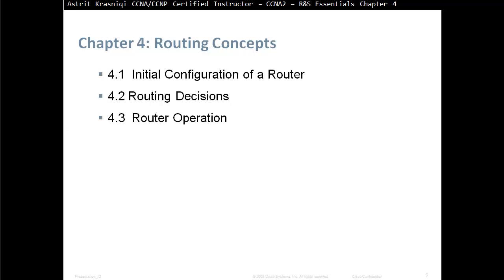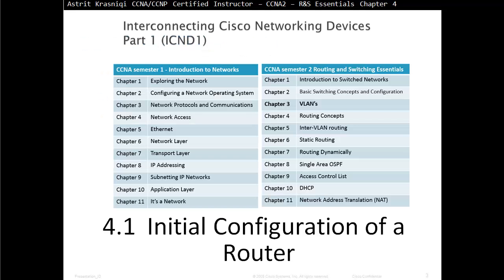Chapter 4, Routing Concepts, is separated into three sections. We have Section 4.1, Initial Configuration of Router. Then Section 4.2, Routing Decisions. Section 4.3, Routing Operations. Section 4.1, Initial Configuration of Router.